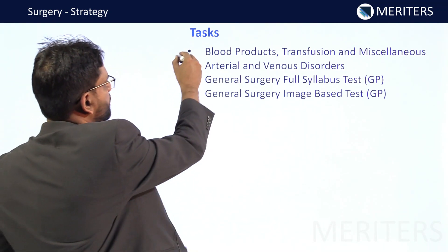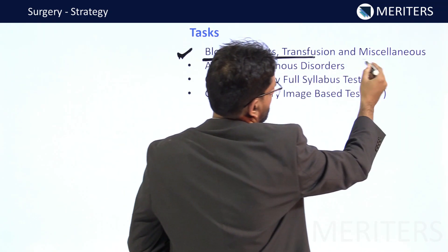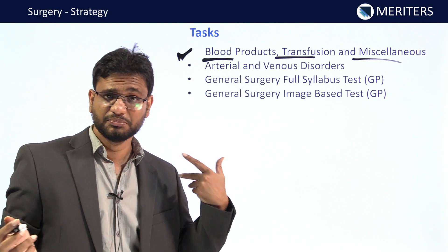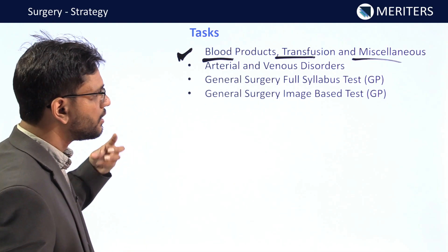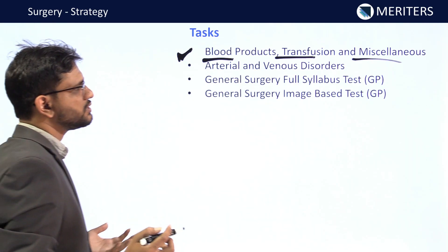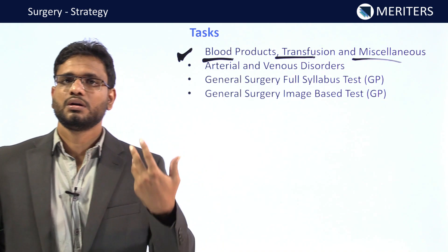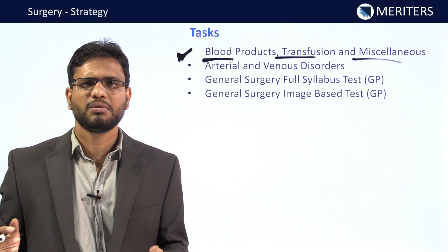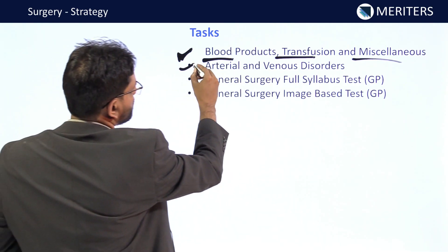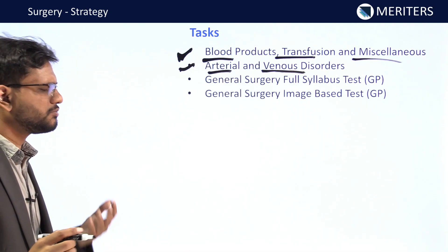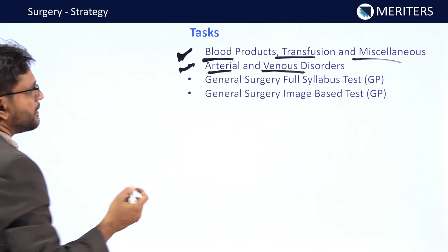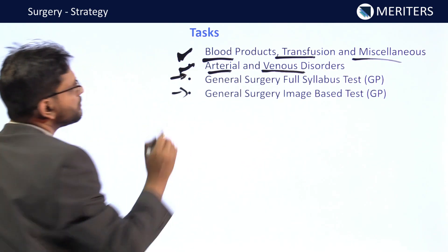Blood products are very important — a lot of questions are asked on factor rate disease, cryoprecipitate, SAGM, their shelf life, and indications. In transfusion, questions focus on blood group systems — ABO, Bombay blood group — and transfusion reactions. Then arterial and venous disorders: not a lot of questions, but one or two can be asked from Buerger's disease or Raynaud's phenomenon. Also, there are viva voce tests and image-based tests to consider.